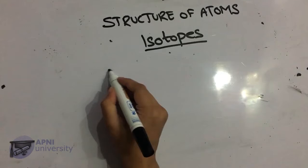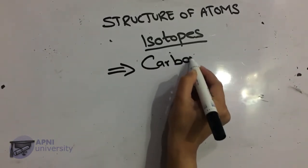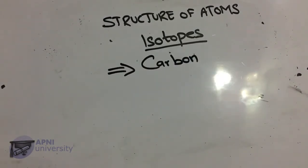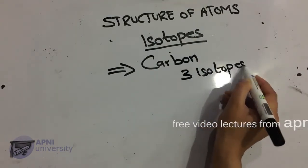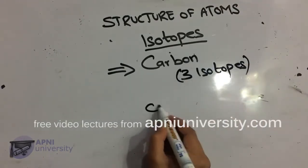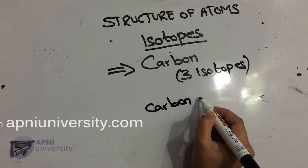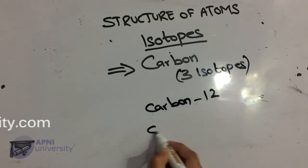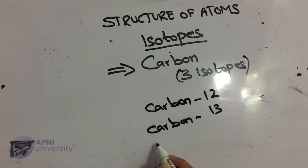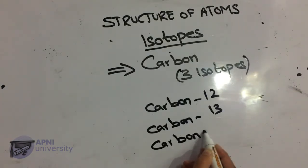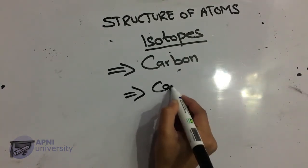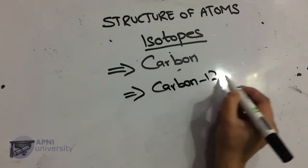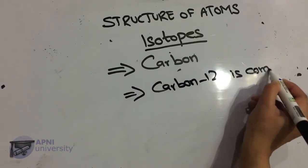Next we have isotopes of carbon. Just as hydrogen exists in three isotopes, carbon also exists in three isotopes: carbon-12, carbon-13, and carbon-14. Almost all carbon is carbon-12, with symbol ¹²₆C, having 6 neutrons and 6 protons.